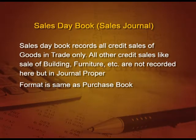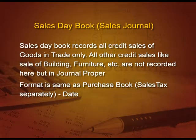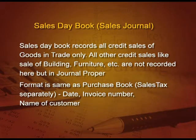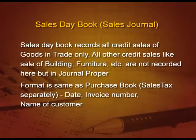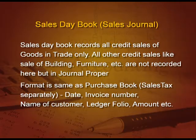The format is the same as the purchase book, but we can have a separate column for sales tax if it is mentioned in the question. The first column starts with date, then invoice number, then name of the customer. Please remember, in purchase book it was name of supplier, now it is name of customer. Then the ledger folio and amount.